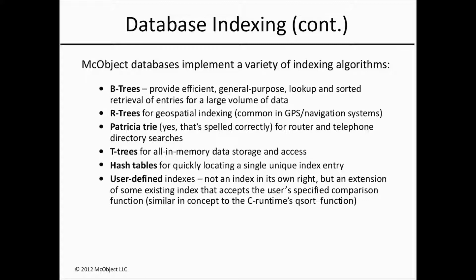This presentation is going to examine less well-known indexes that can be a good fit for certain application needs. The B-tree is the most popular data structure used in database and file systems, and provides efficient, general-purpose lookup and sorted retrieval of entries for a large volume of data. We'll look at R-trees for geospatial indexing, which is common in GPS and navigation-type systems. We'll examine the Patricia tree for router and telephone directory searches, also known as a longest prefix match index.